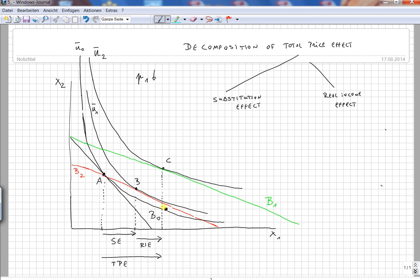So the first good in this diagram can be called, first, ordinary, and second, normal. That's important to understand when it comes to decomposition of total price effect. Thank you for watching and listening.